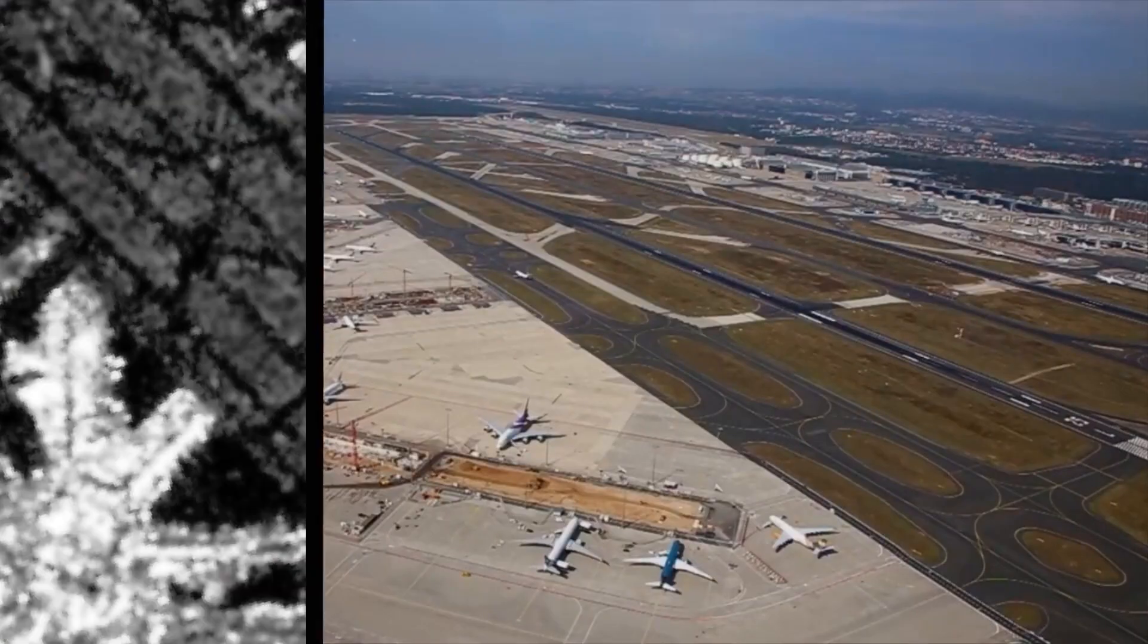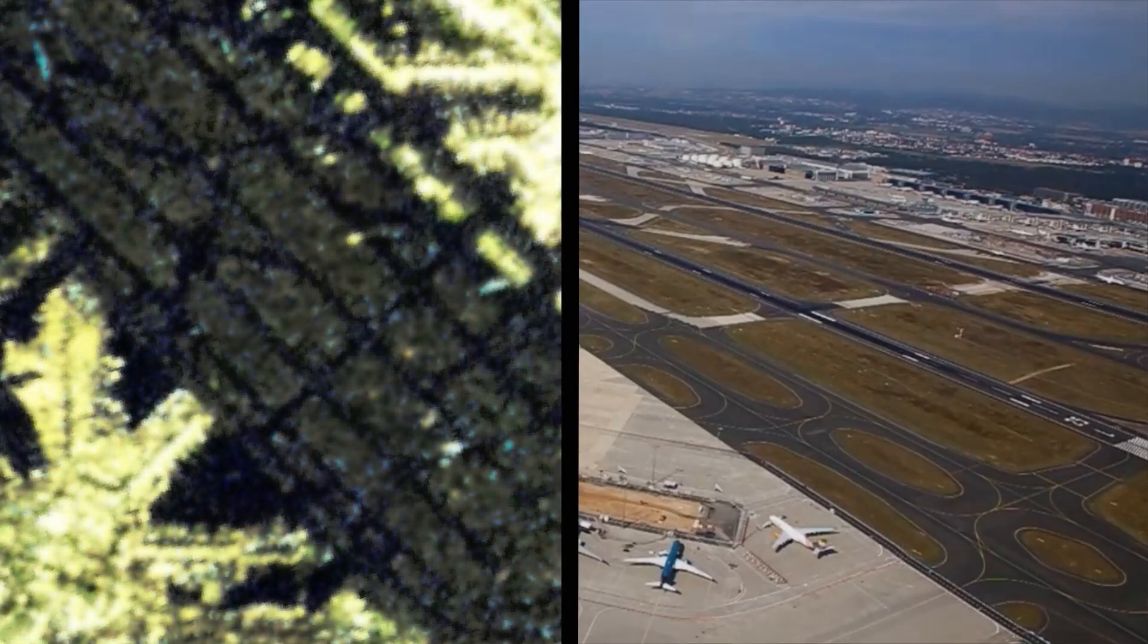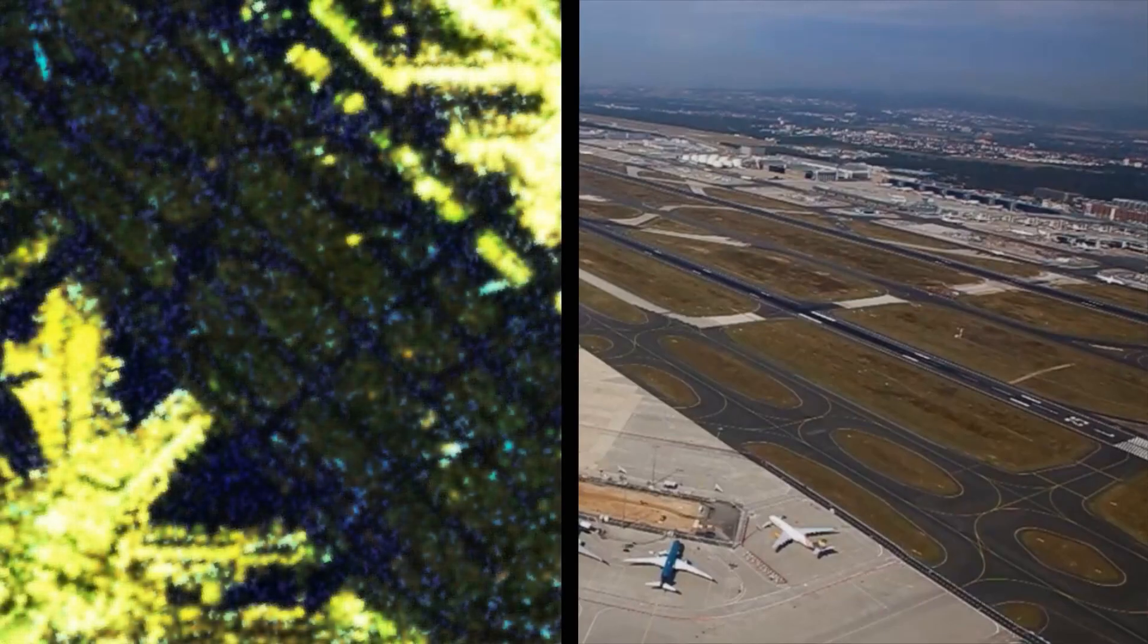When we compare these images with the radar image, we quickly understand what can or cannot be detected in a radar image. As we have learned, a radar cannot measure wavelengths of visible light. The image can indeed be colorized, but these colors do not correspond to our usual perception.